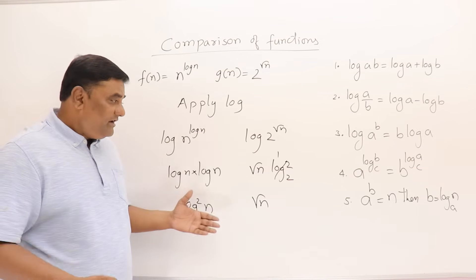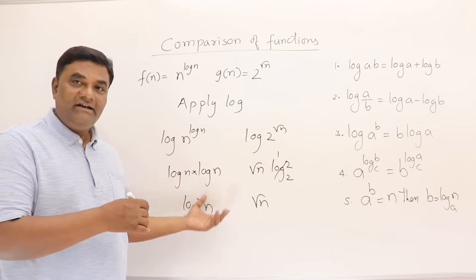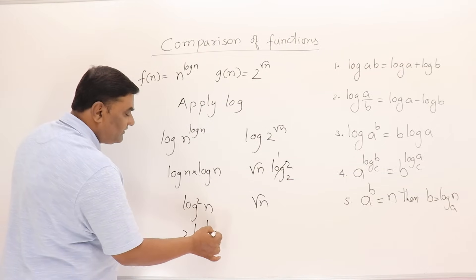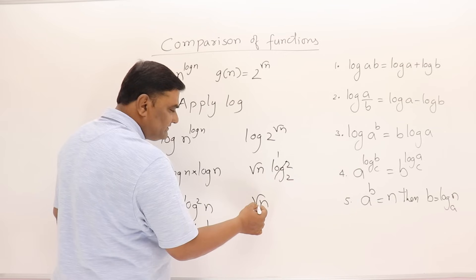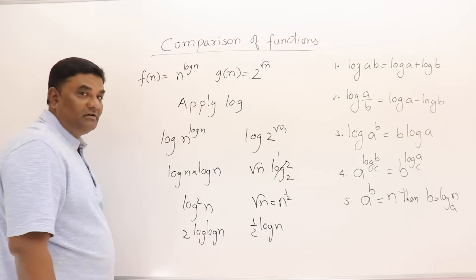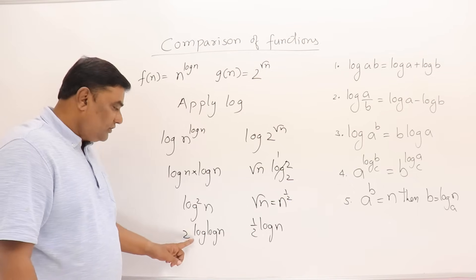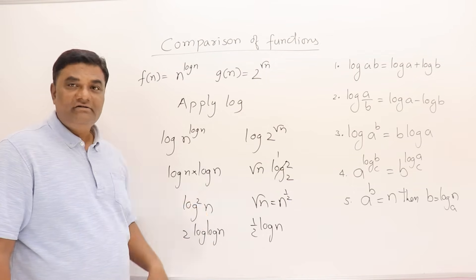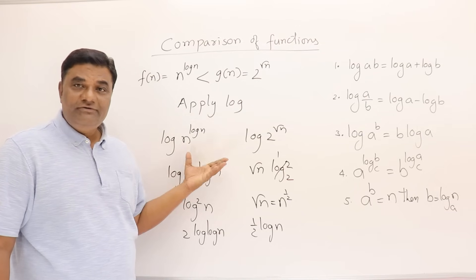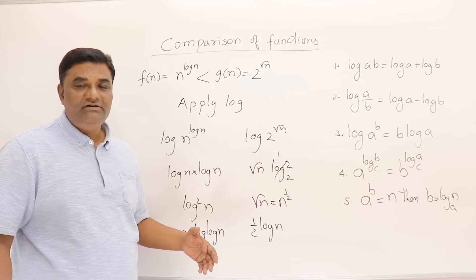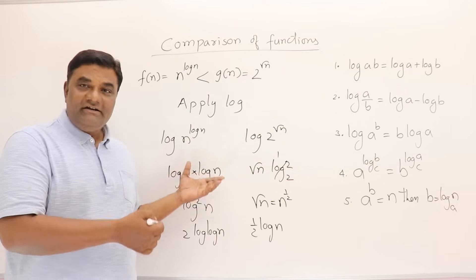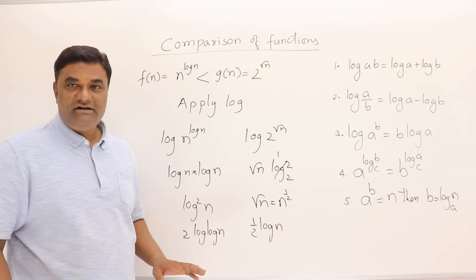If you're still unable to judge which is greater between log² n and √n, apply log again. Applying log gives 2·log(log n) on the left and (1/2)·log n on the right. Now we can see that log(log n) is smaller than log n. So this side is smaller. You can apply log as many times as needed — there's no fixed rule, just keep reducing until you can compare.